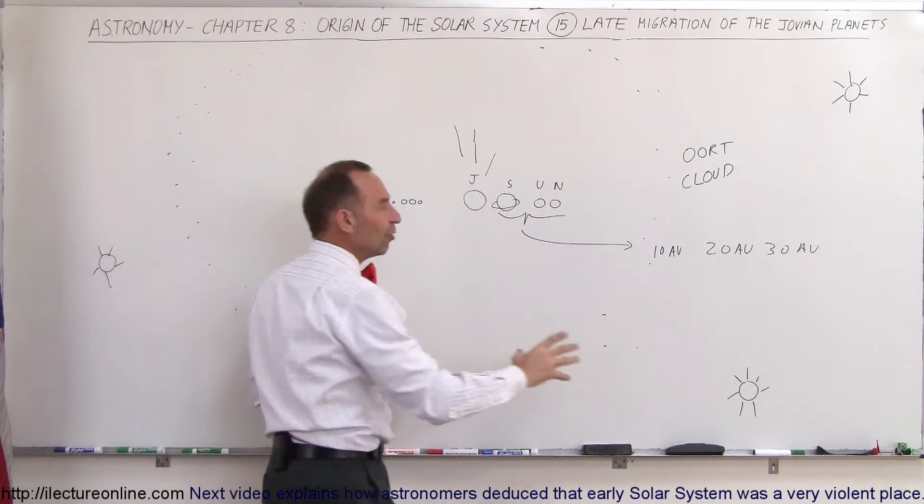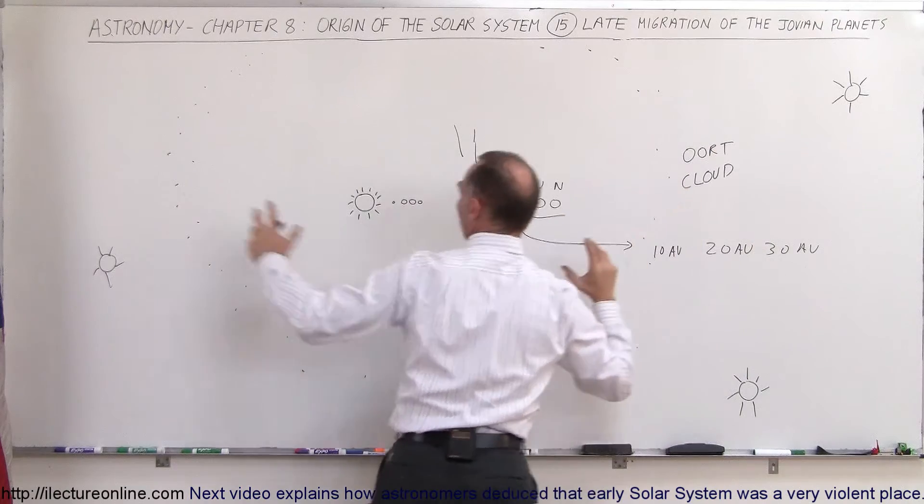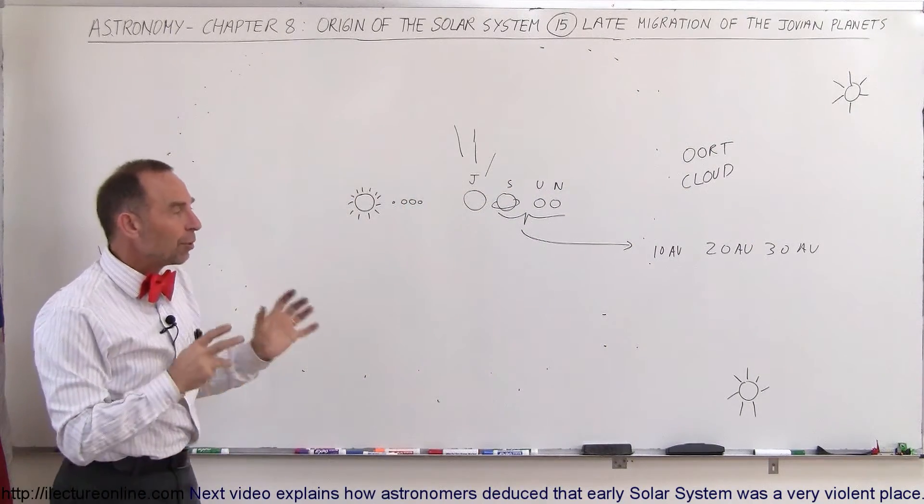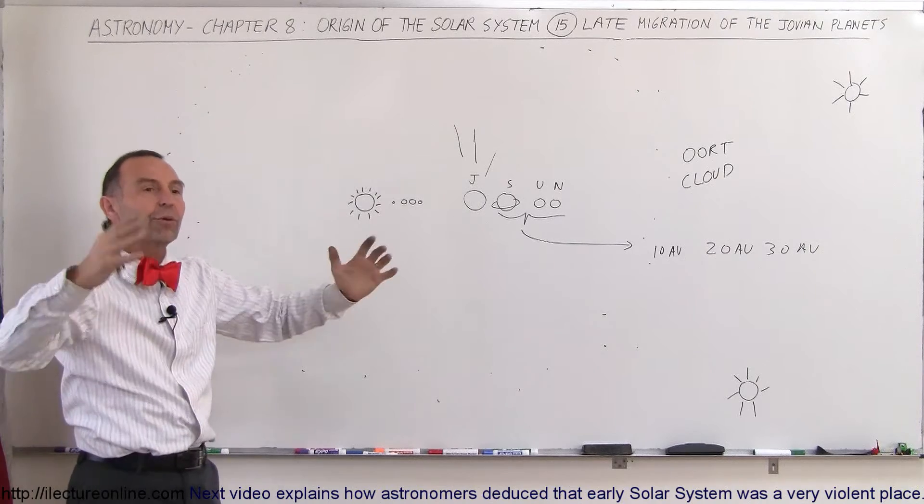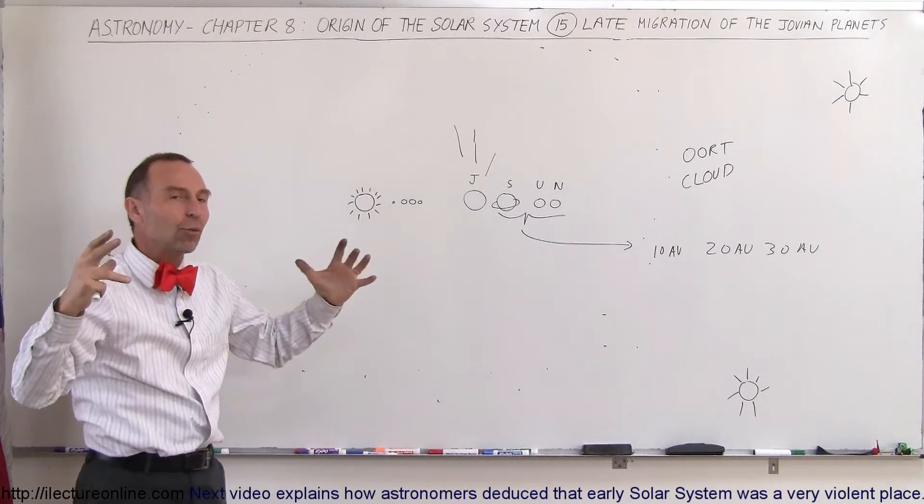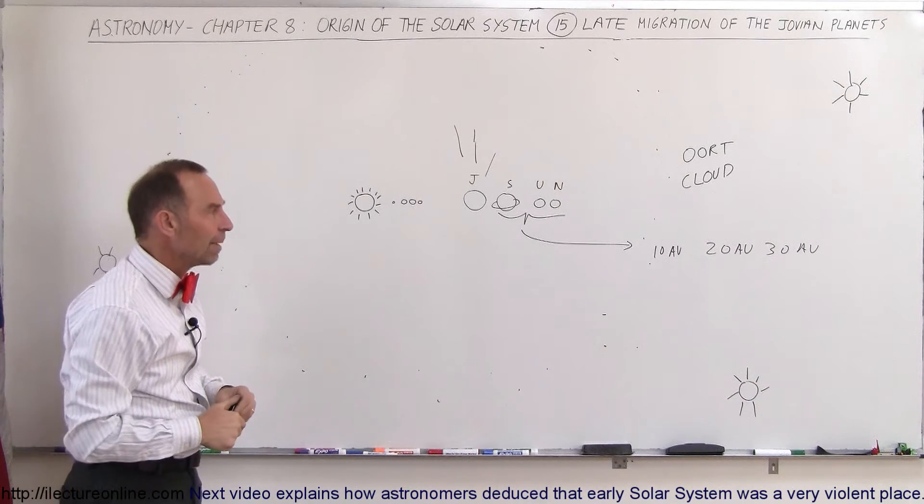And the influence of nearby stars that must have been out there within so many light years from our sun, that would have then kept them from going further into space, but kind of guided them into these spherical orbits. And that's why we think the Oort cloud exists and looks the way it does today.